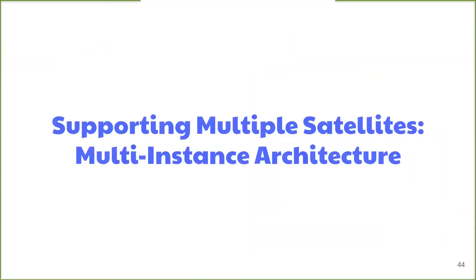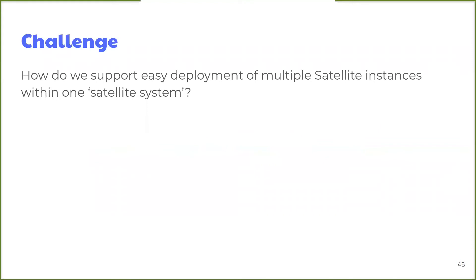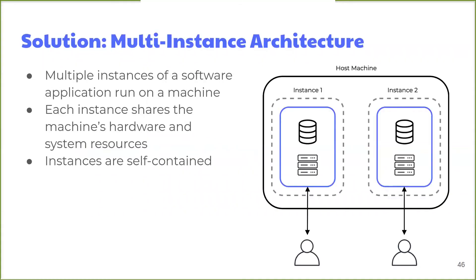Now I'll turn it over to Elias to discuss the multi-instance architecture. After deploying a single Satellite, we turned our attention to how we could deploy several Satellites. Supporting multiple Satellites is essential since front-end developers may want the ability to develop several applications or several versions of the same application. The challenge was: how can we transform our current architecture, which supports only one Satellite instance, into an architecture that supports multiple Satellite instances? The type of architecture we chose is a multi-instance architecture, where multiple instances of a software application run on a machine, each sharing hardware and system resources while being self-contained.